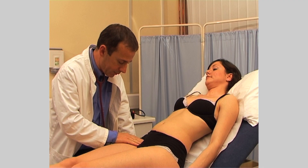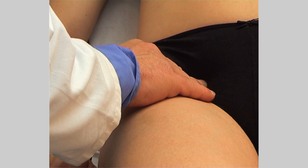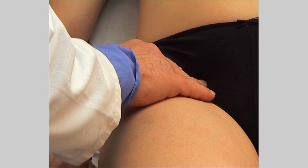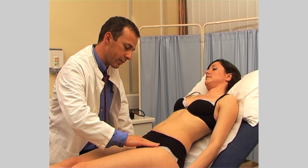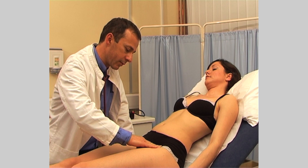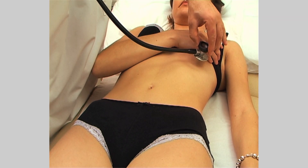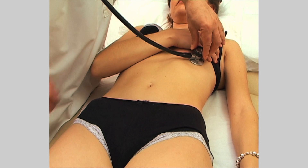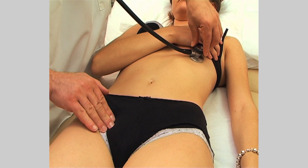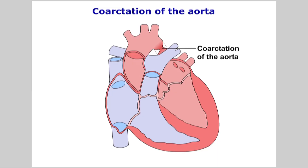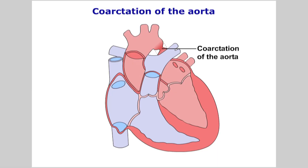Then move more distally and locate the femoral artery, which is inferior and medial to the inguinal ligament. Feel for the pulsations of the femoral artery and time this against the auscultated systolic sounds. A delay may indicate coarctation of the aorta.